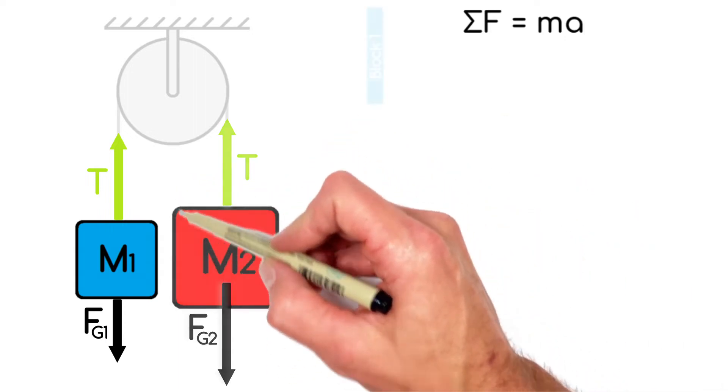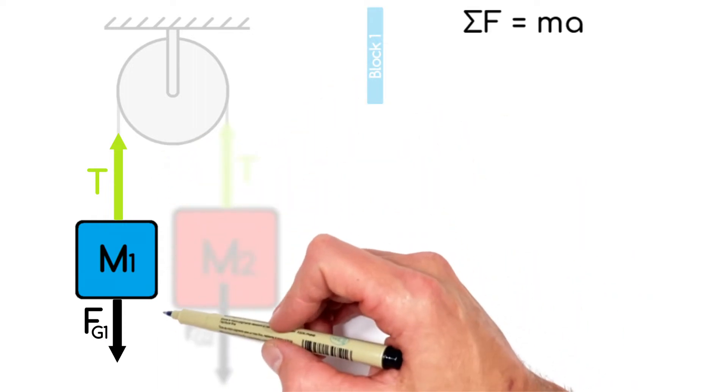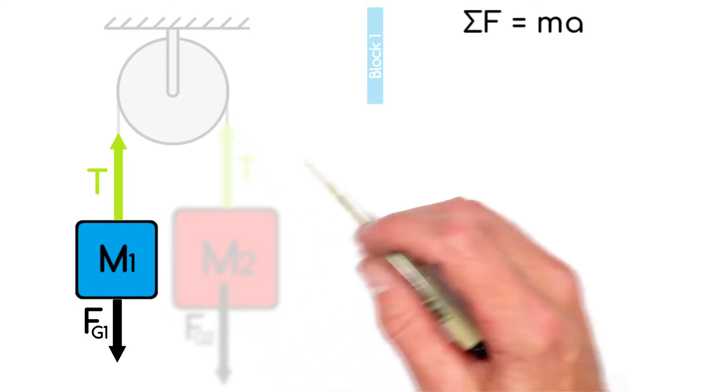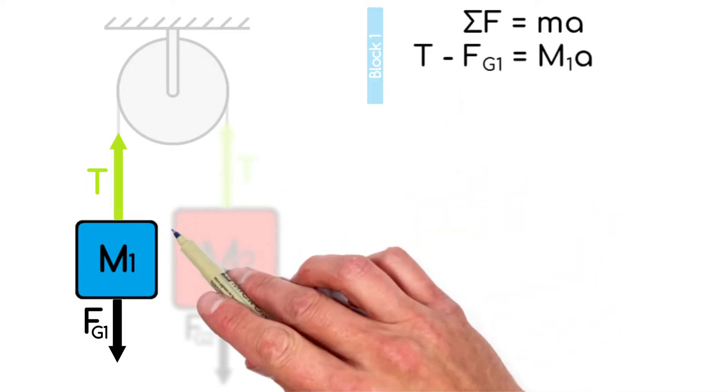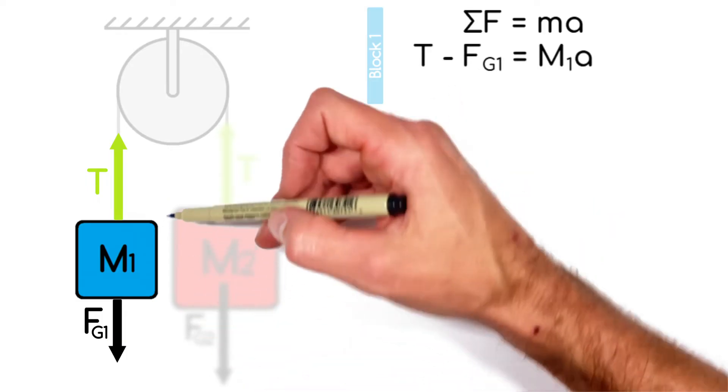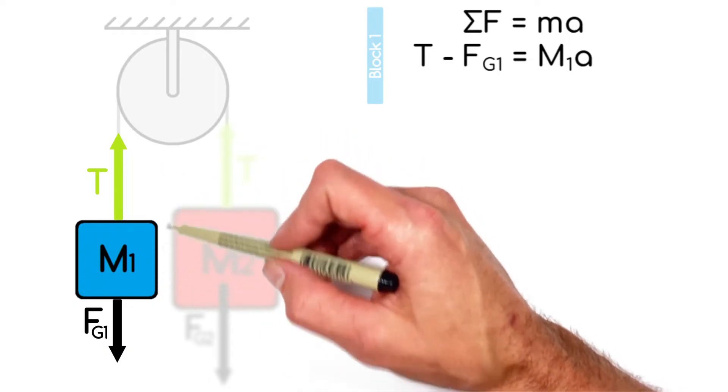So looking first at this block right here, there's the tension acting upward and gravity acting downward. Those make up what's called the net force or the sum of all forces acting on this block. But the issue is because one force is acting up and the other downward, they're opposing each other.